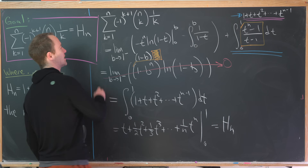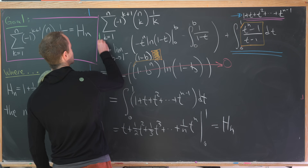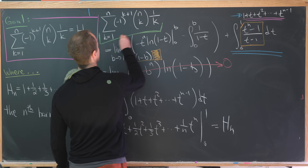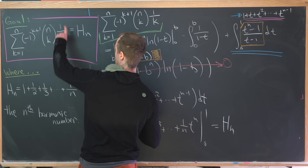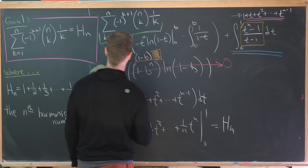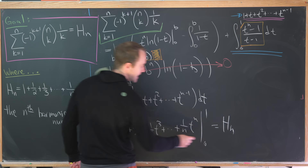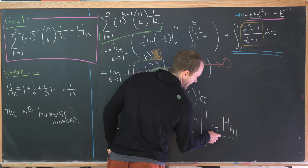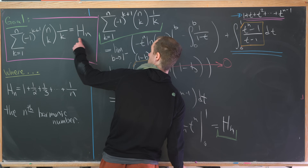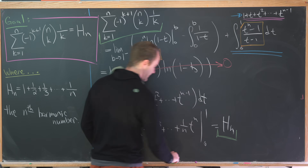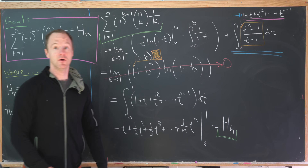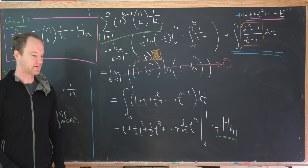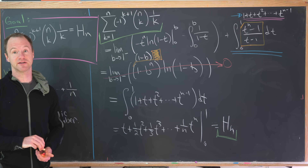We started with the sum on the left-hand side of our identity and ended with the nth harmonic number on the right-hand side, completing the proof. And that's a good place to stop.